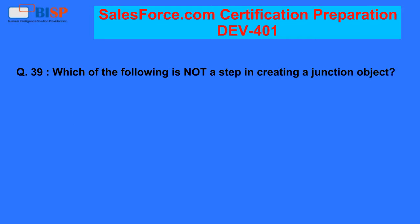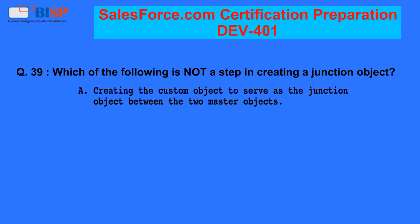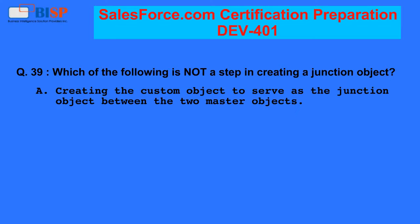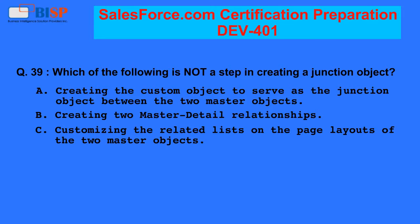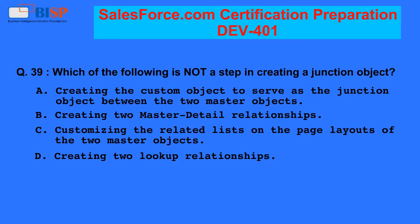Question 39: Which of the following is not a step in creating a junction object? A. Creating the custom object to serve as the junction object between the two master objects. B. Creating two master detail relationships. C. Customizing the related lists on the page layouts of the two master objects. D. Creating two lookup relationships.